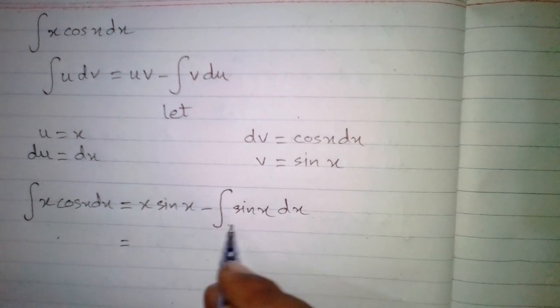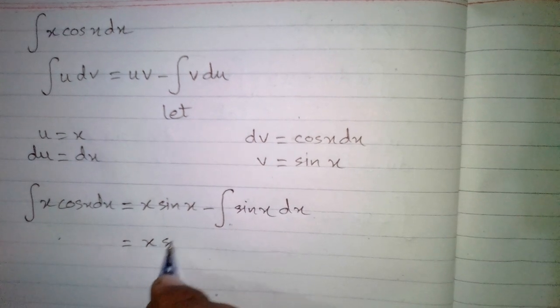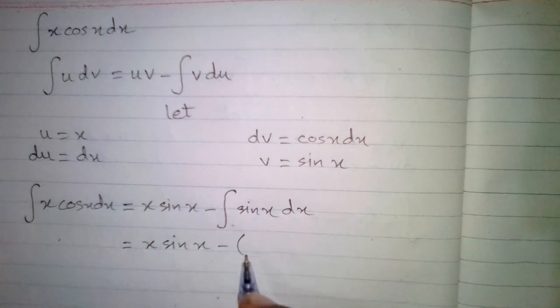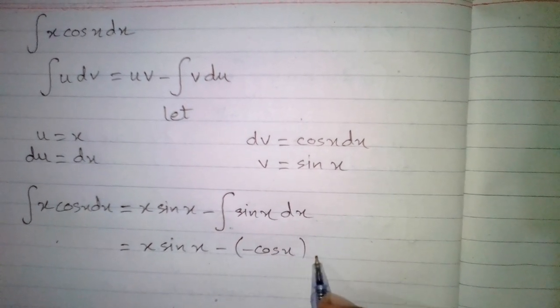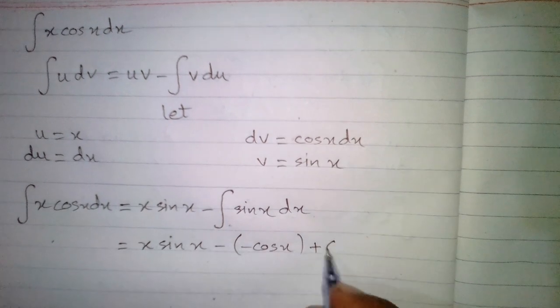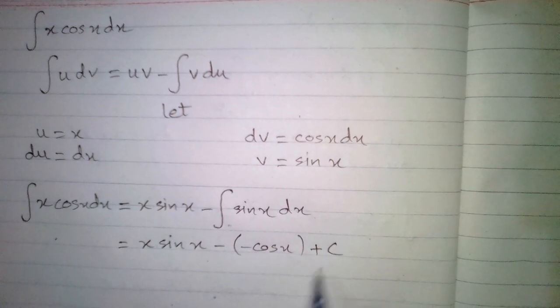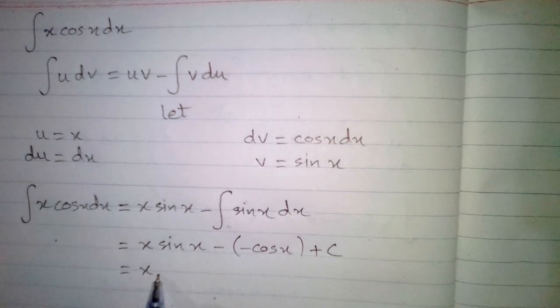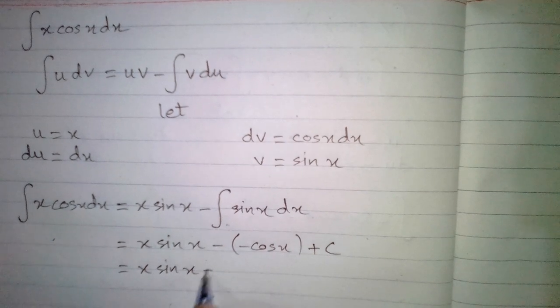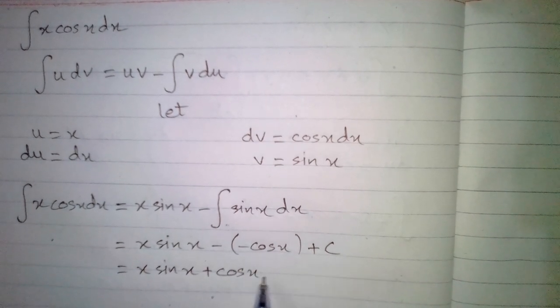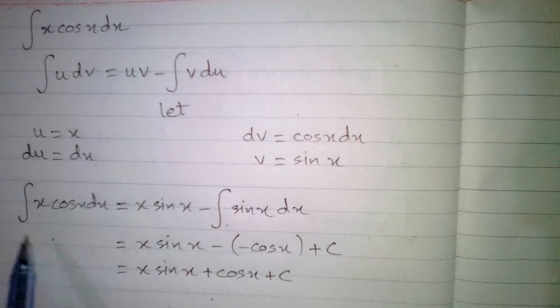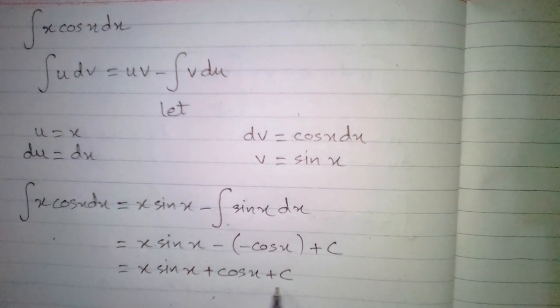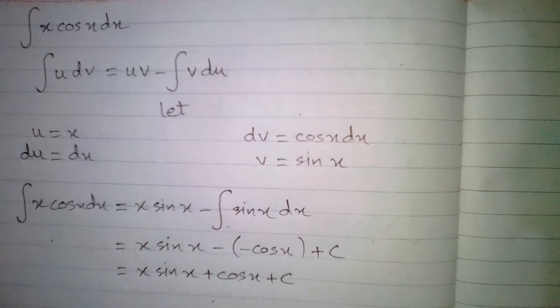Now we will simplify this integral. We can get x sin x minus integral of sin x is minus cos x. So we have x sin x minus times minus cos x plus c. The integral of x cos x with respect to x is x sin x plus cos x plus c, where c is the constant of integration.